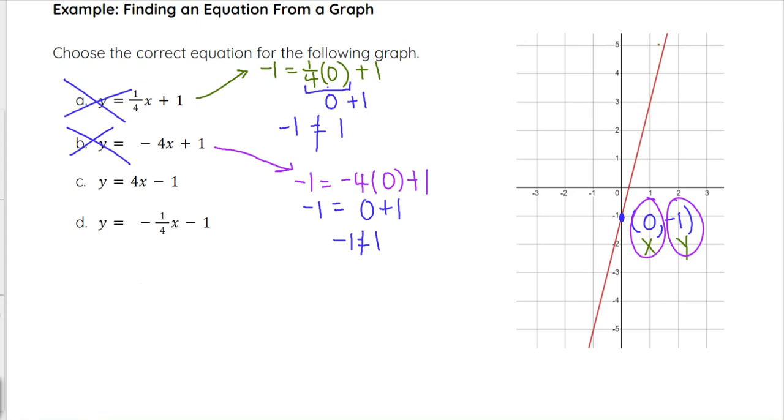Let's take a look at C. Looking at choice C, we have negative 1 equals 4 times 0 minus 1. We end up with negative 1 equals 0 minus 1. Negative 1 equals negative 1 is a true statement.